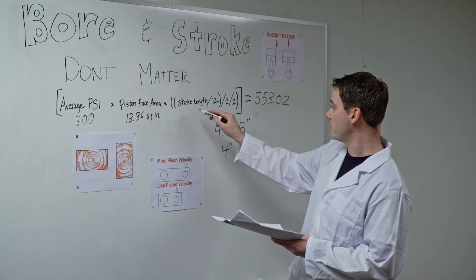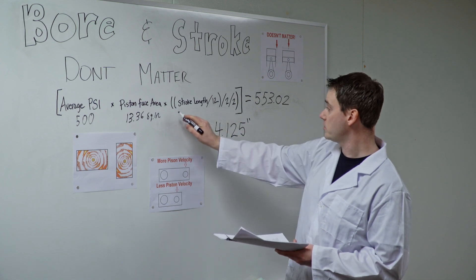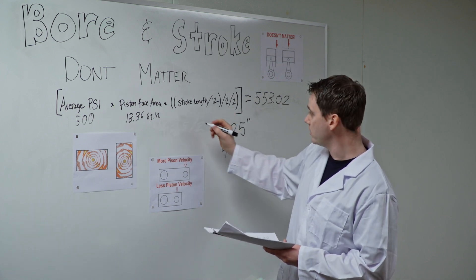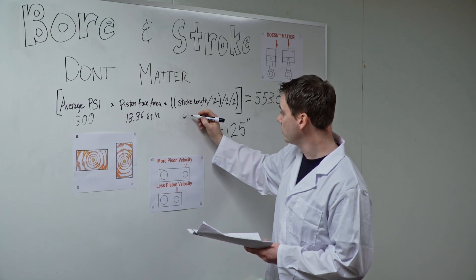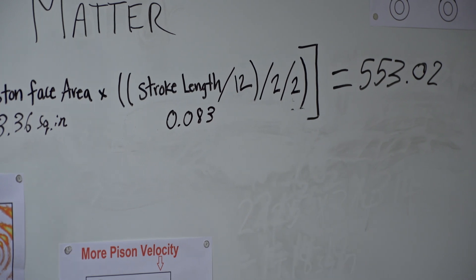And then our leverage is going to change as well. I'm not going to make you go through all this math again, but just trust me that once we do all that on a 4 inch stroke, that's going to increase to 0.083, which is a little bit more than we had because now we've got a 4 inch stroke instead of a 3.76 inch stroke.